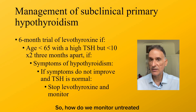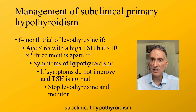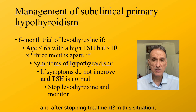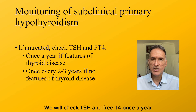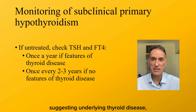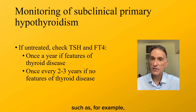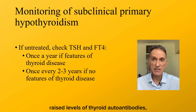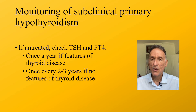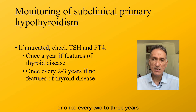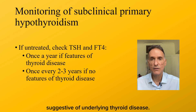How do we monitor subclinical hypothyroidism after stopping treatment? We will check TSH and free T4 once a year if they have features suggesting underlying thyroid disease, such as raised levels of thyroid autoantibodies, or once every two to three years if they have no features suggesting underlying thyroid disease.